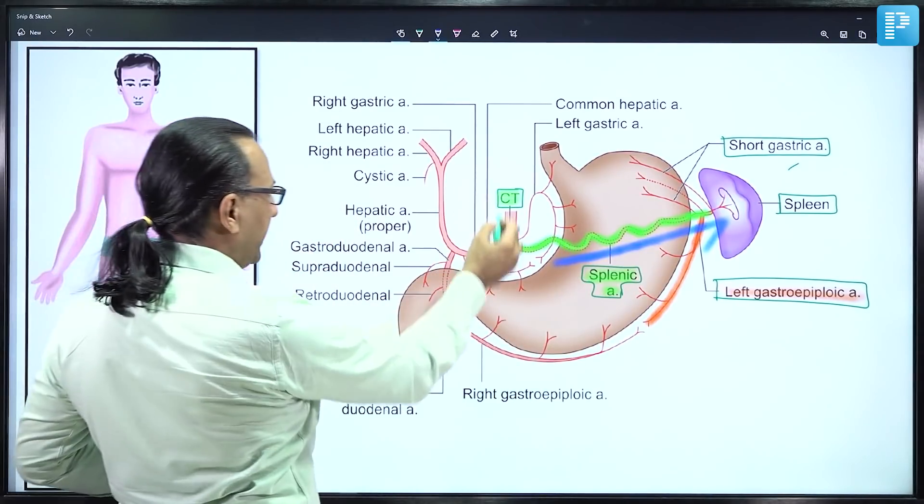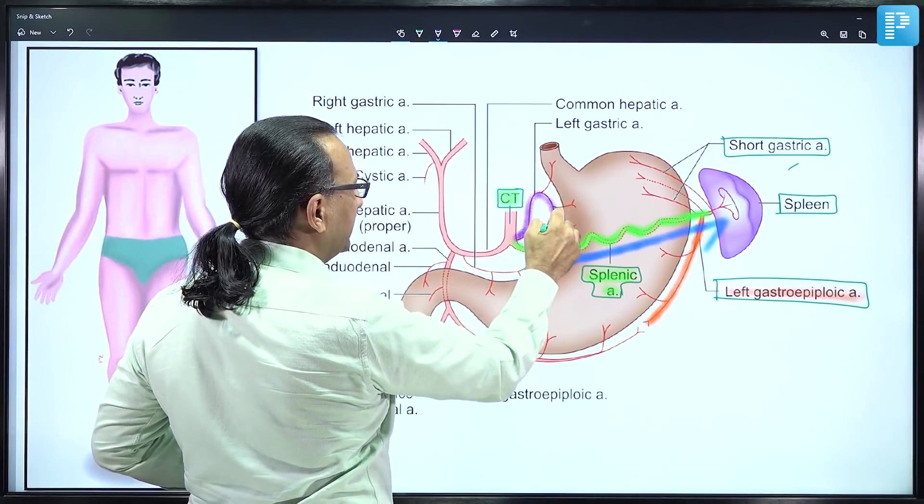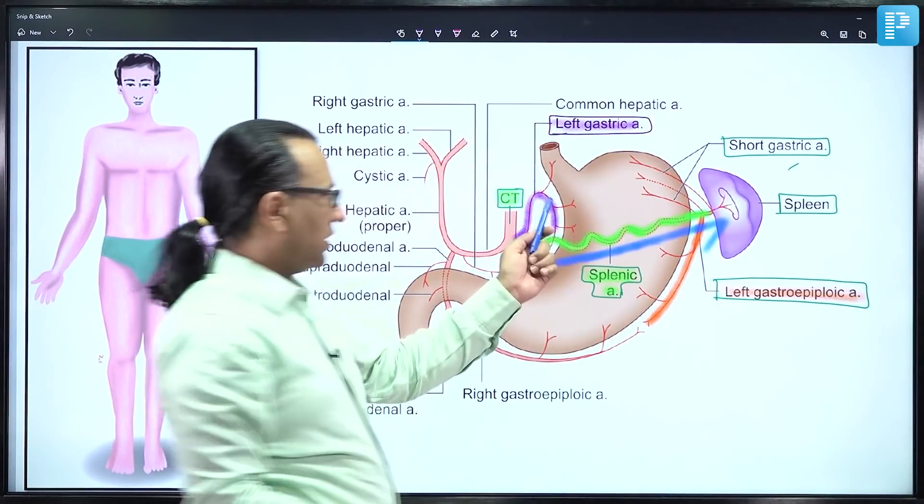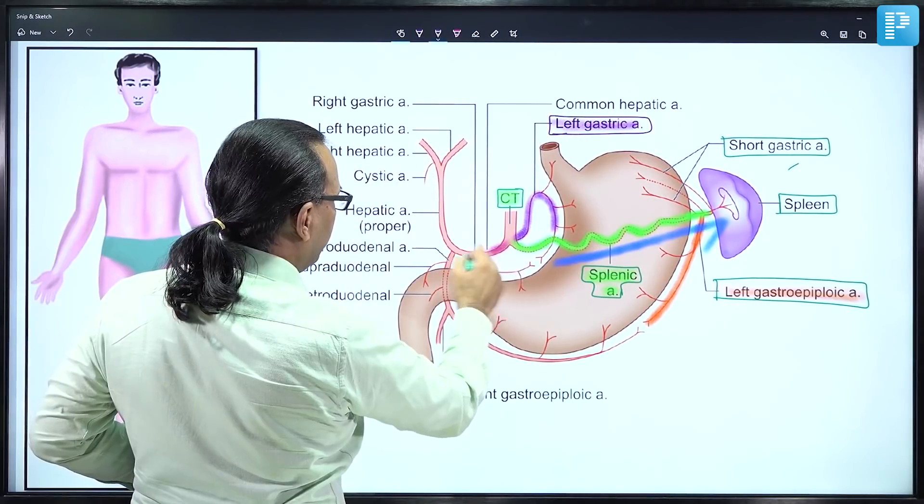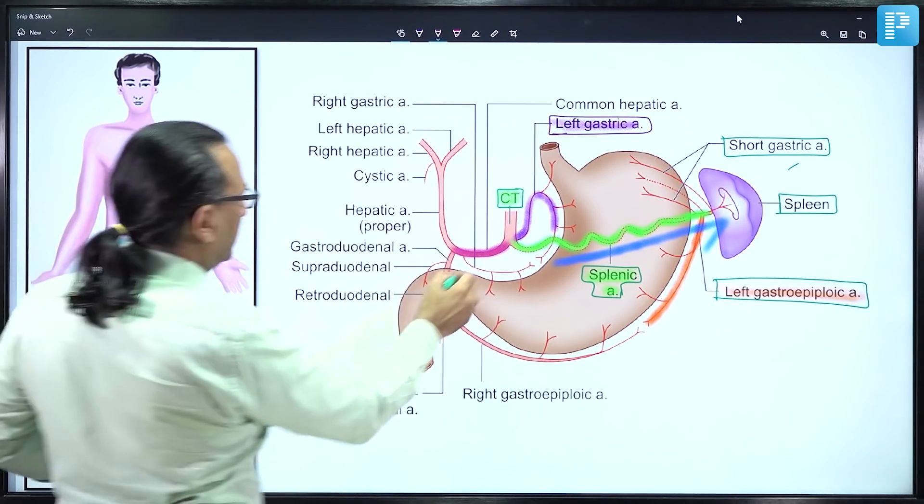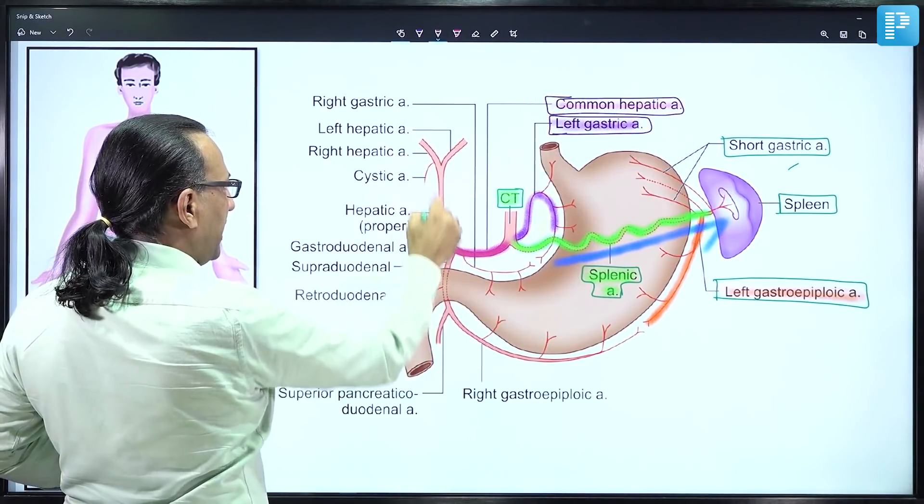Notice that the celiac trunk also gives off the left gastric artery, which runs along the lesser curvature of the stomach, and the common hepatic artery. It's called 'common' because it further divides into two branches.